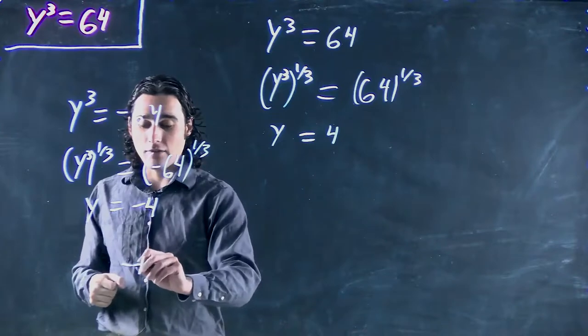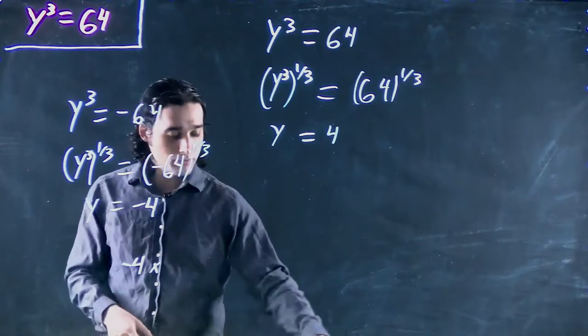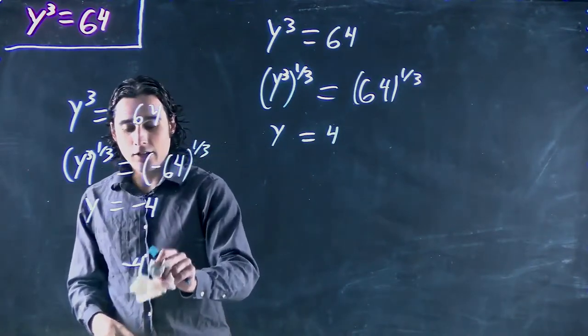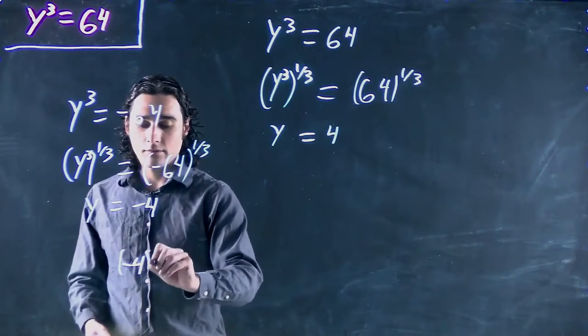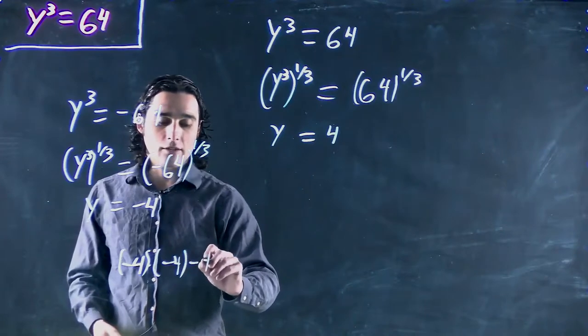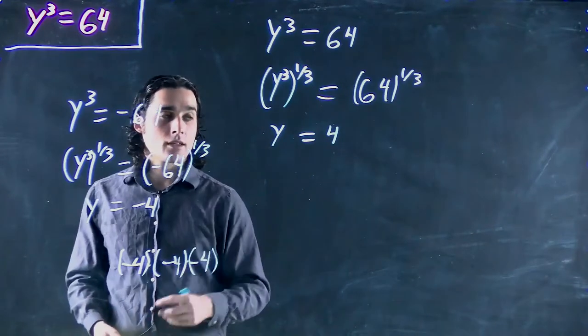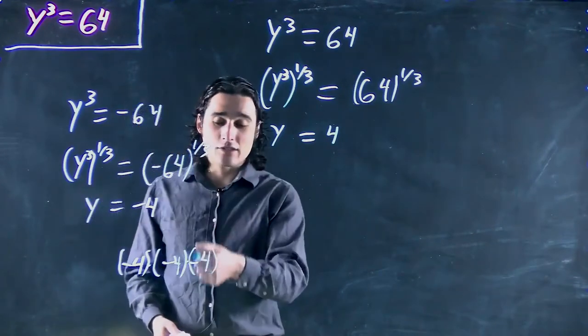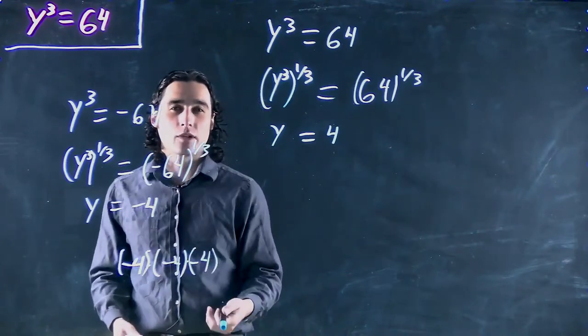So in our case, negative 4 times negative 4 times negative 4. That's going to equal negative 64 because you can think two of the negatives will cancel. We're still left with one. And really, this just actually shows a general rule.